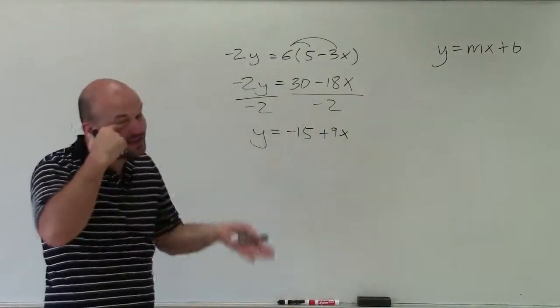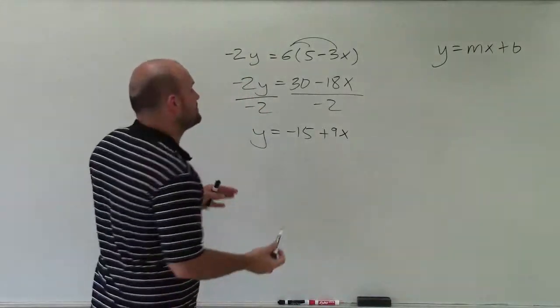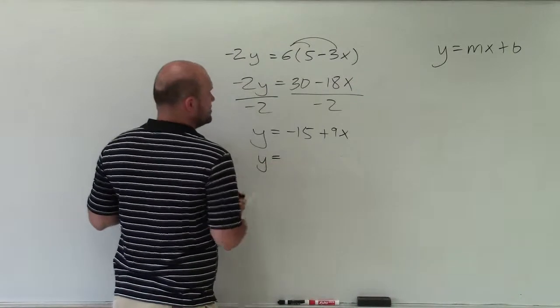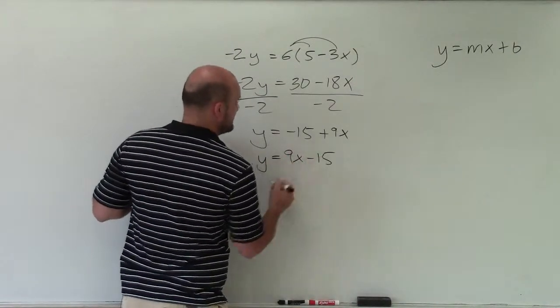And again, I'm very close to having a slope-intercept form, but it's not exactly. I'm going to want to swap the terms so now it's a slope-intercept form. So I have y equals 9x minus 15.